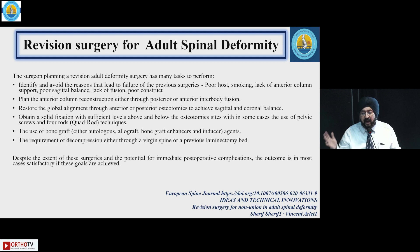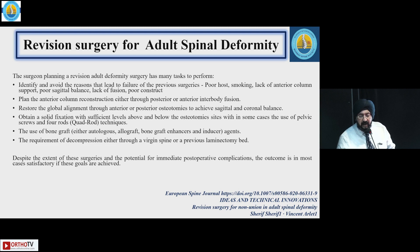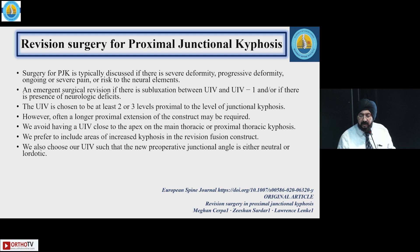For adult spinal deformity revision, one must identify and avoid the reasons that led to failure of previous surgeries. The plan should include anterior column reconstruction through posterior or anterior interbody fusion, restoration of global alignment, solid fixation, and decompression through a virgin spine or previous laminectomy bed. Outcomes are generally satisfactory but cannot be excellent. Proximal junctional kyphosis can occur if surgeries are not well planned.